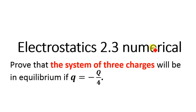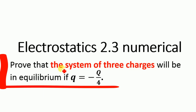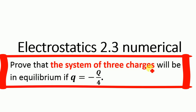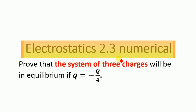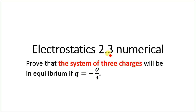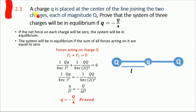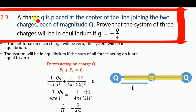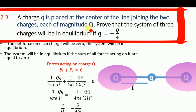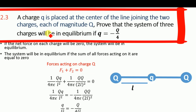Today we will solve this simple numerical. We will prove that the system of three charges will be in equilibrium if the middle charge q is equal to minus Q divided by 4. This is problem number 2.3 from the electrostatic chapter.